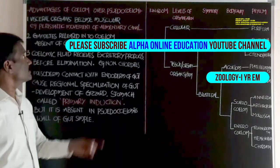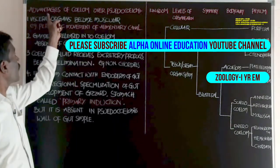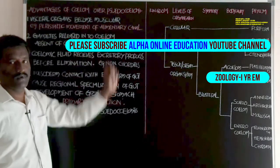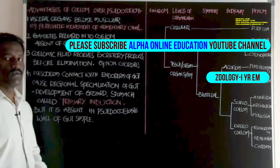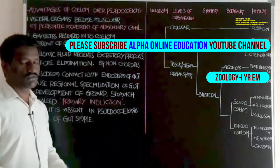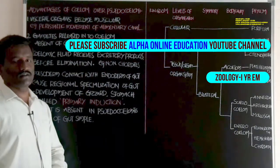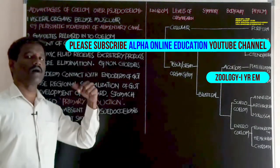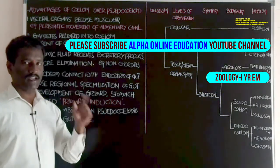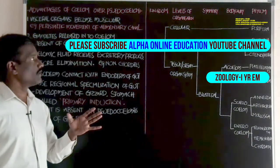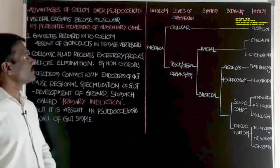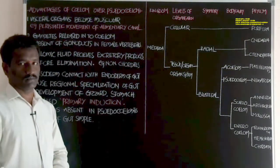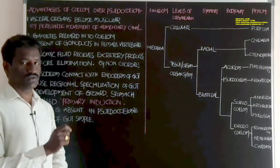Students, I will discuss the advantages of true coelom over pseudo-coelom. What are the additional advantages of the presence of true coelom compared to pseudo-coelom in animals? In this advantage of the true coelom, the perivisceral cavity is present in the animals.